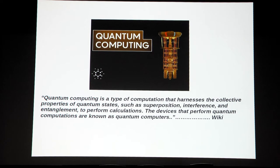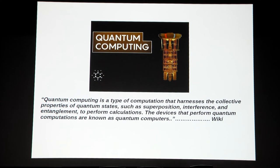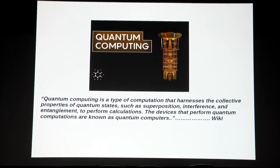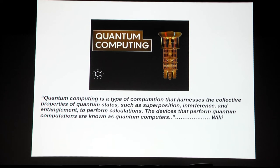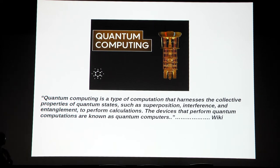Almost everyone has heard about quantum computing. It is a type of computation that harnesses collective properties of quantum states — like superposition and interference. Normal computers work on the principle of bit manipulation where a bit is either one or zero. But in quantum mechanics, out of these two states, you can by superposition create an infinity of other states. A computer built on that algorithm would be far faster — a revolution.